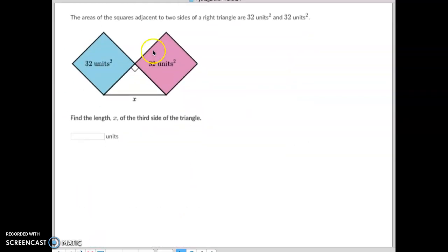Last type. They'll give you the area of the small square, the area of the other small square. We know a squared plus b squared, so we're going to add these two together to get our c squared side, which is 64.